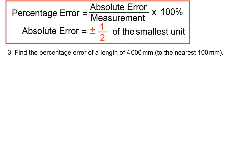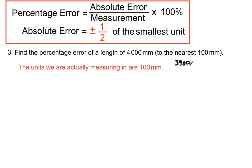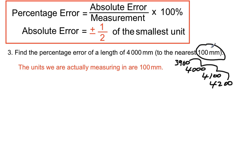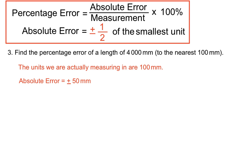Now here's an interesting variation. This one asks us to find the percentage error of a length of 4,000 millimetres, but the question expresses this as 4,000 millimetres rounded to the nearest hundred millimetres. When that occurs, we have to treat the rounding to the nearest hundred millimetres as if that's what we're measuring in. It's almost like measurements go 3,900, 4,000, 4,100, 4,200 — we're expressing these in whole lots of 100 millimetres at a time. So that's effectively the smallest unit we're measuring in, and plus or minus half of that — 50 millimetres — is our absolute error.